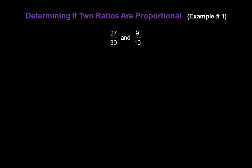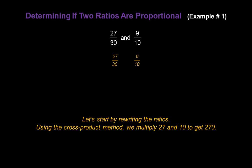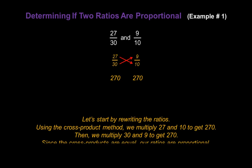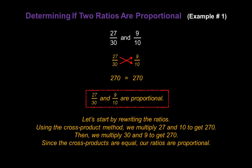Now let's determine if two ratios are proportional. We have 27 over 30 and 9 over 10. Using the cross product method, we multiply 27 and 10 together, which gives us 270, placed under 27 over 30. Then we multiply 30 and 9 together, which also gives us 270. Since the cross products are equal — 270 equals 270 — the ratios are proportional. 27 over 30 and 9 over 10 are proportional.